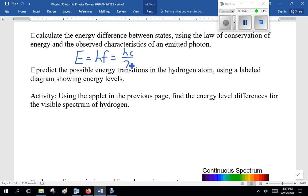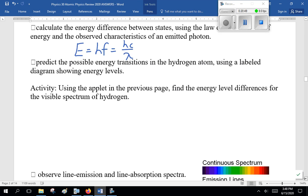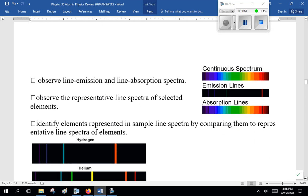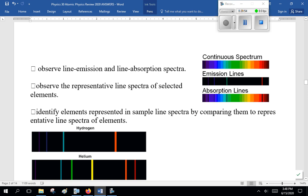Now, predict the possible energy transitions in the hydrogen atom using a labeled diagram showing energy levels. Just like we did. Now, that applet I mentioned on the previous page, that KCVS one, you can do energy level differences and convert that to colors, I believe.